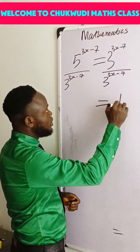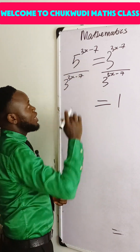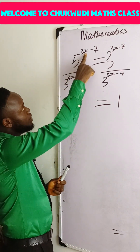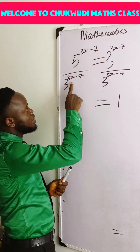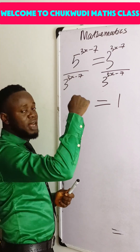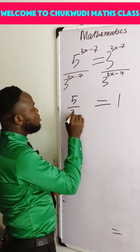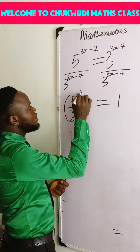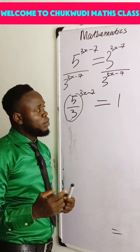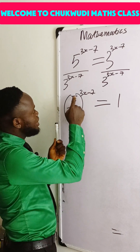That means this divided by this gives you 1. Now you can see that both terms have 3x minus 7 as the exponent — the same exponent. Since the exponents are the same, we can combine them together and raise to one of those exponents.